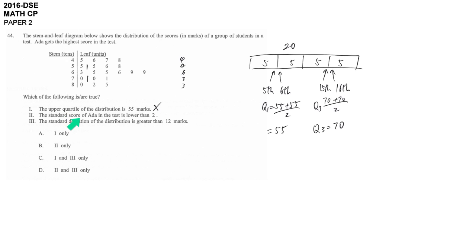The second statement is about the standard score. To know about the standard score, we must get the standard deviation first. We get the standard deviation. It's 11.575 something.